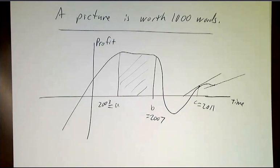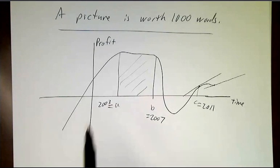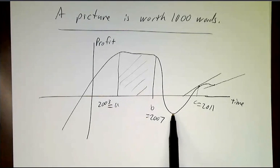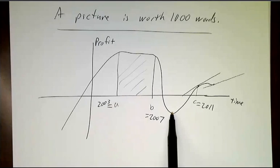And you might say, then the picture has meaning. What does it mean to be way up here? It means you were having a really good year. What does it mean to be down here below zero? It means you were losing money.